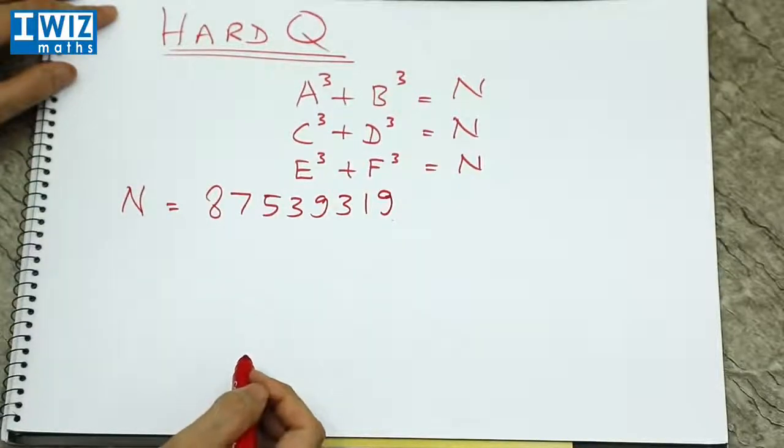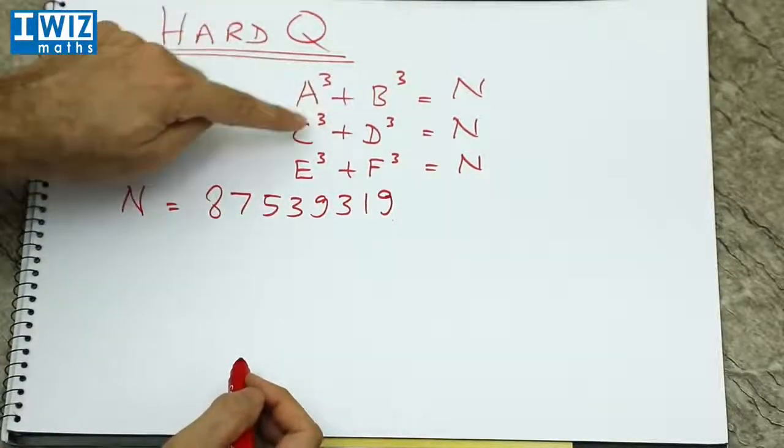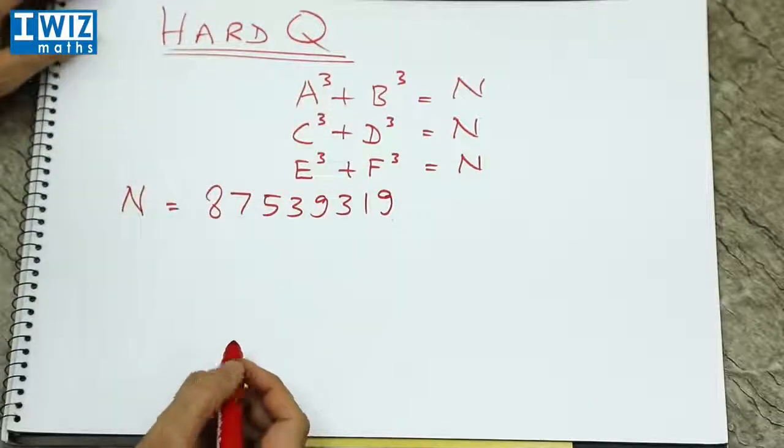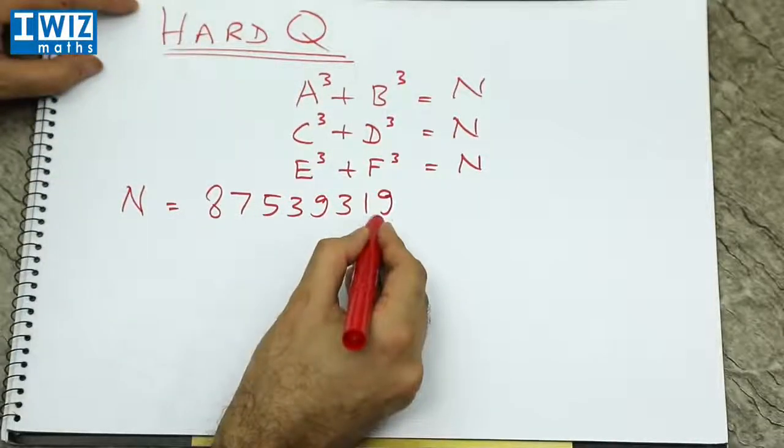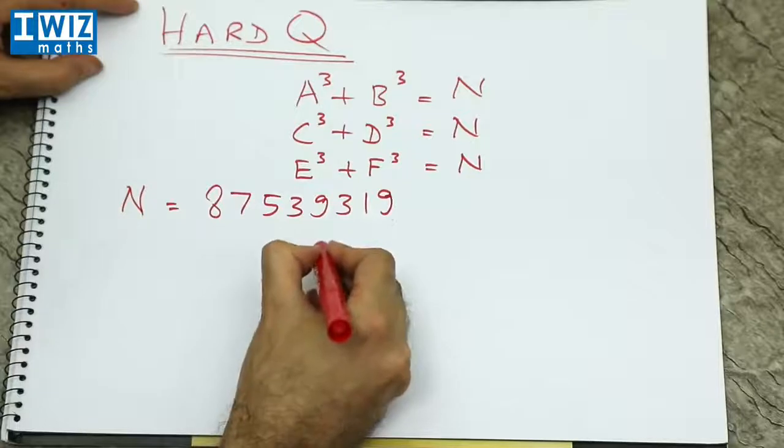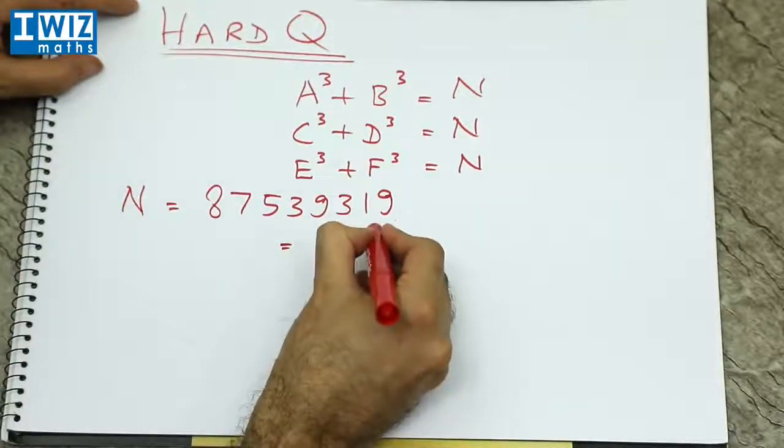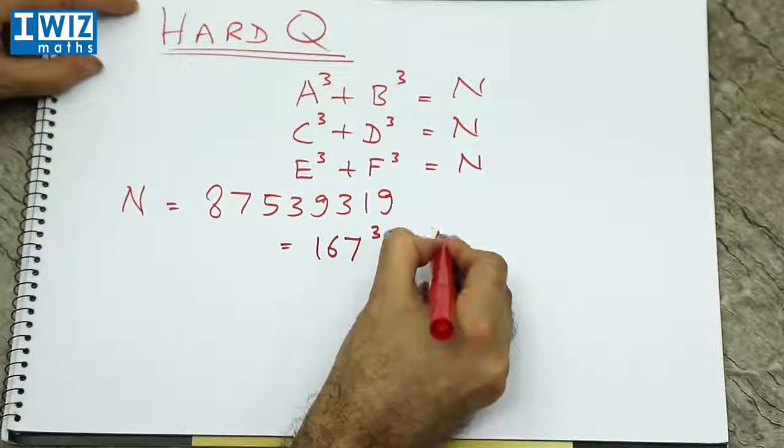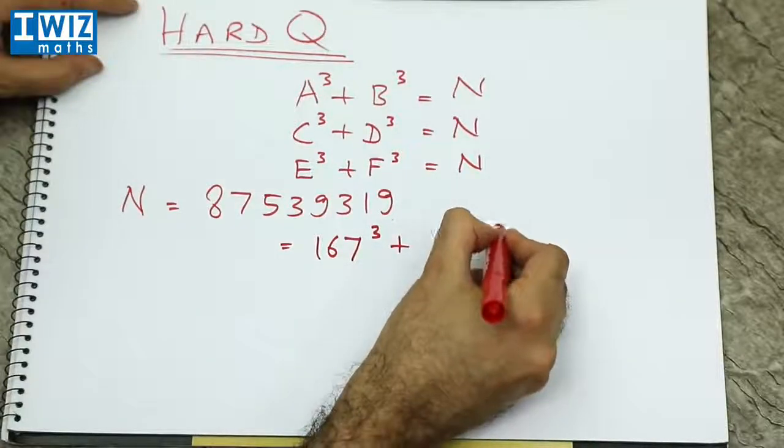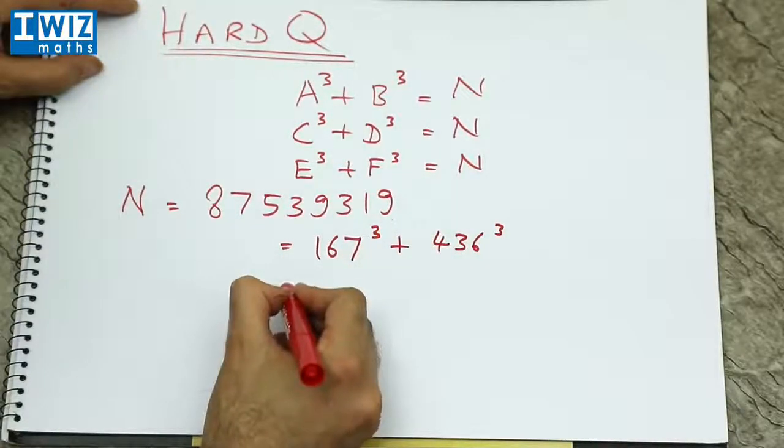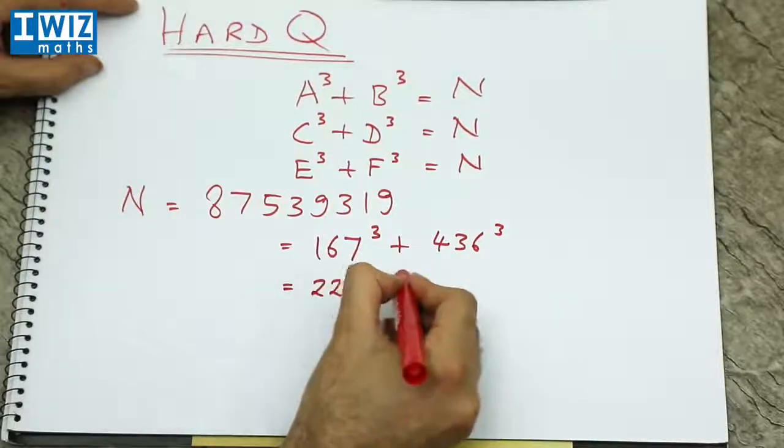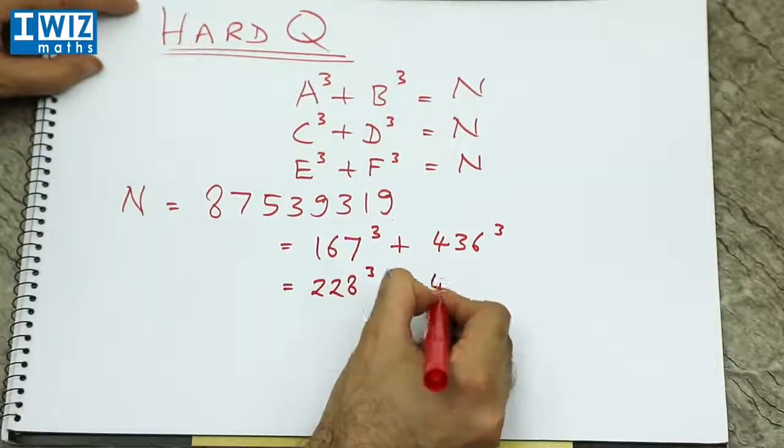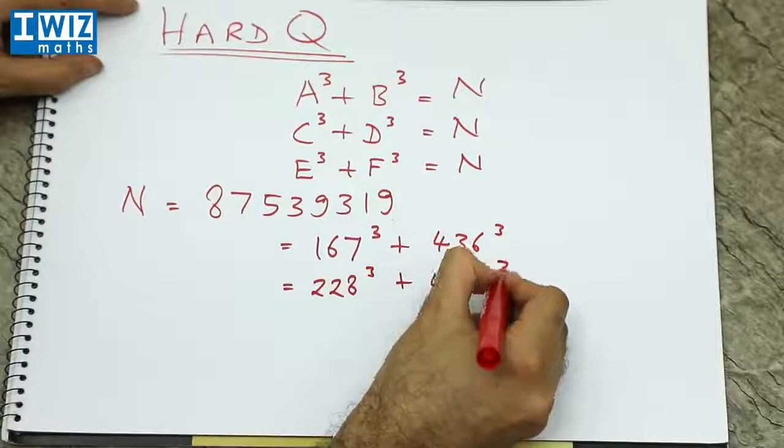And the question now is what are a, b, c, d, e, and f? This number can be written as 167 cubed plus 436 cubed.